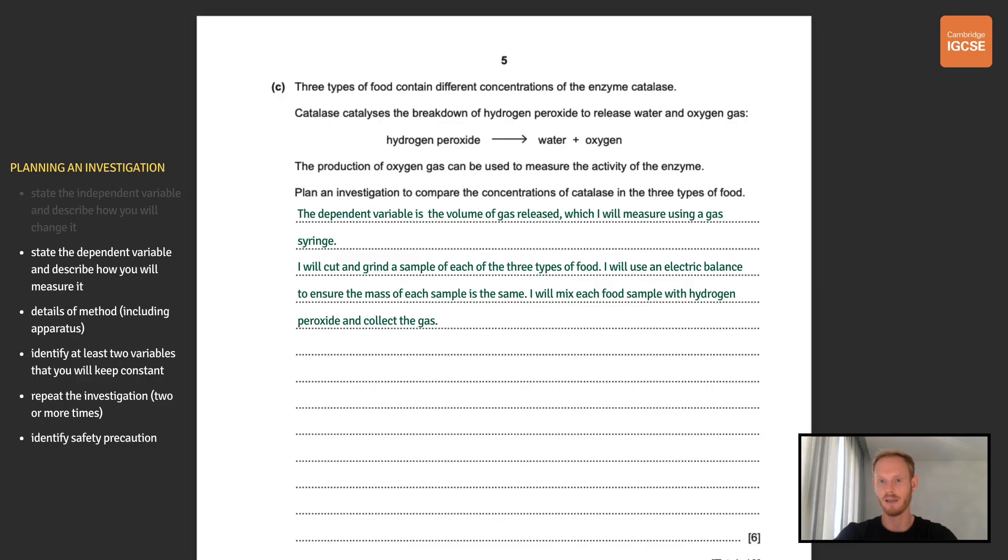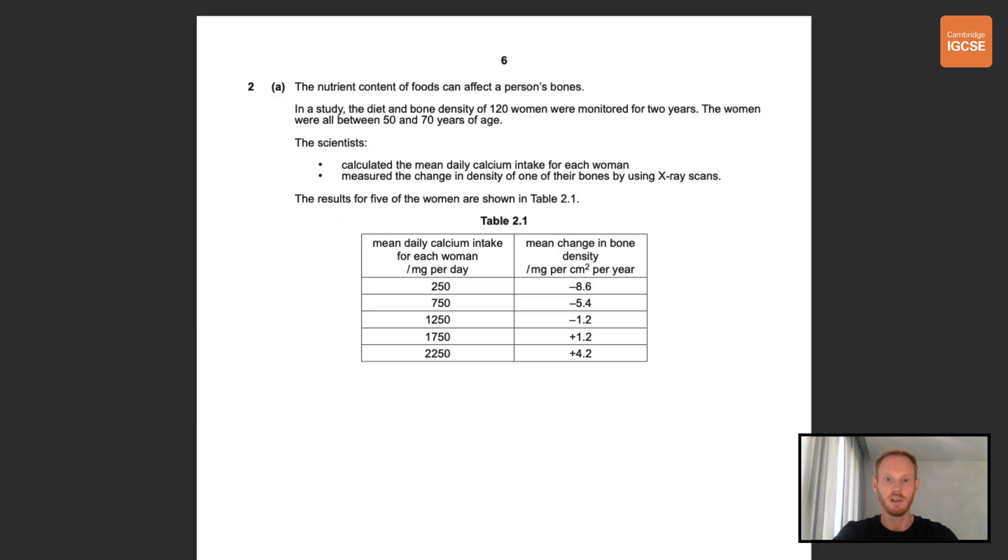So the dependent variable is the volume of gas released which I will measure using a gas syringe. Next you'll want to move on to details of the method and there are four points you can make here. To prepare the food samples for example by cutting or grinding. To weigh the food using a balance or scales to ensure that each sample is the same mass. To mix or stir the food with hydrogen peroxide. And finally the method used to collect the gas which I already mentioned. Next you'll get up to three marks for mentioning control variables or things that you need to keep constant. The ones I've gone for are temperature, volume of hydrogen peroxide and time for gas collection. Then you'll get one mark for stating that you will repeat the investigation at least two times. And finally one mark for identifying a safety measure, for example taking care when using a knife or wearing gloves when handling the hydrogen peroxide.